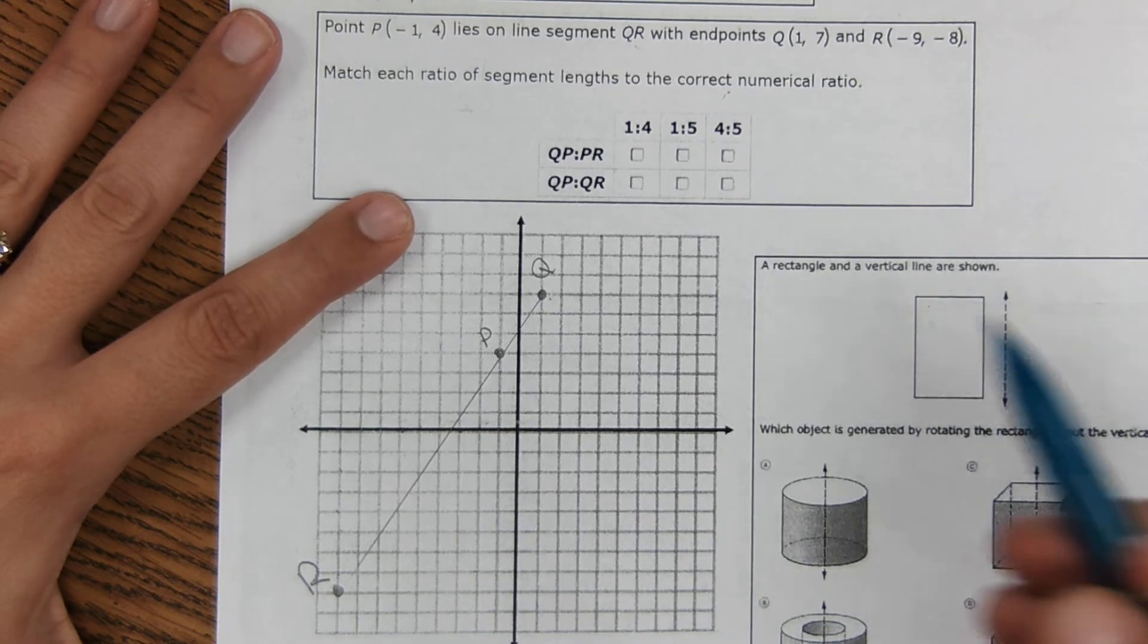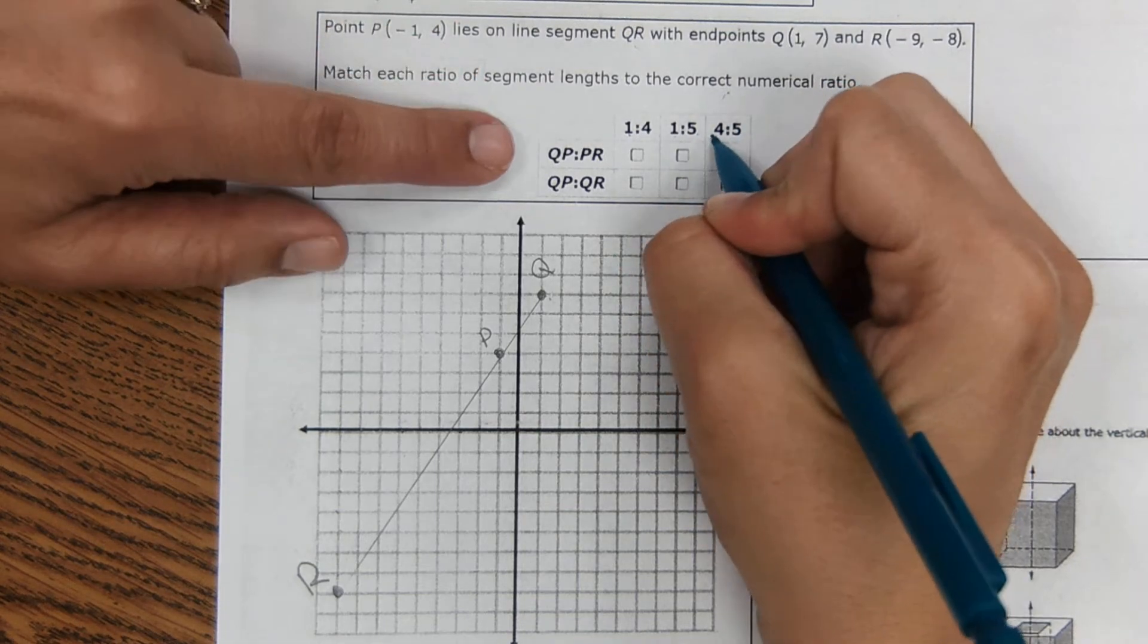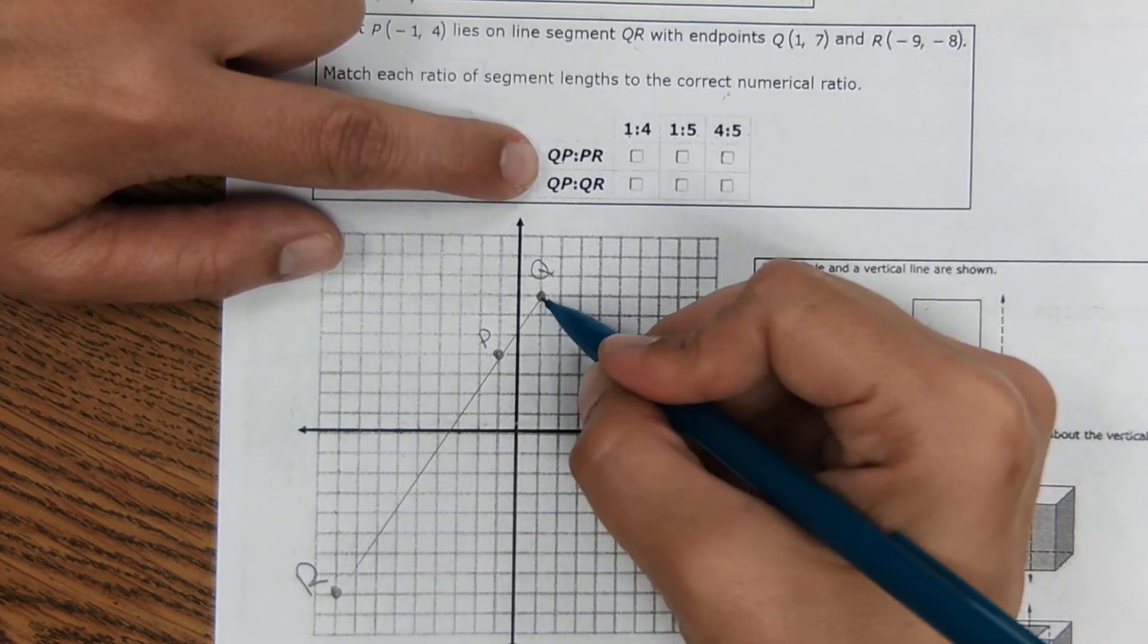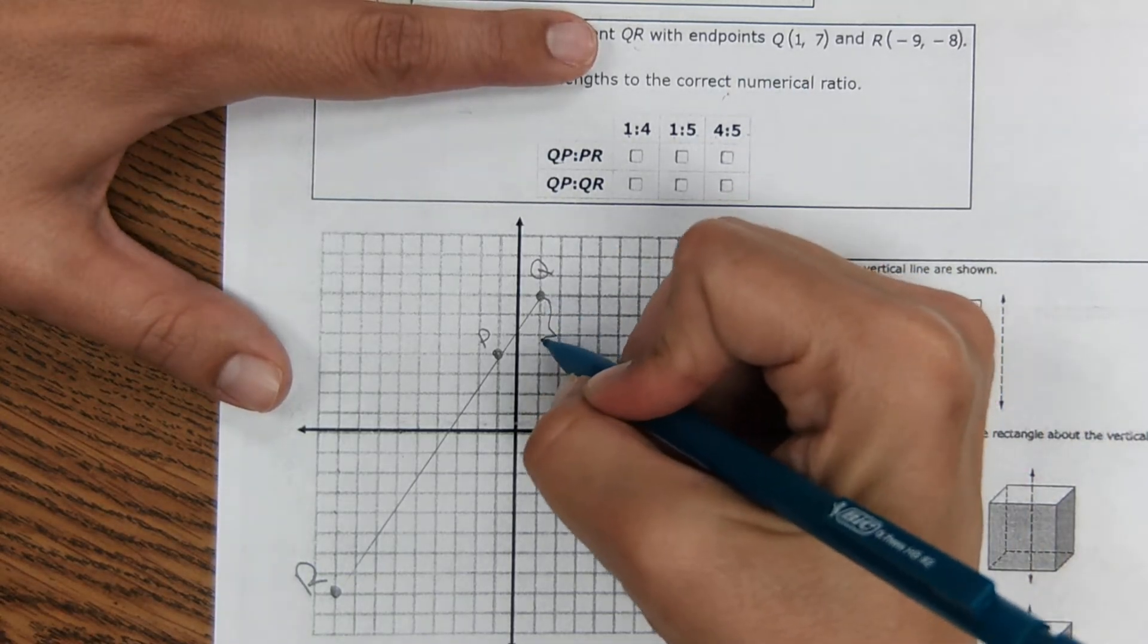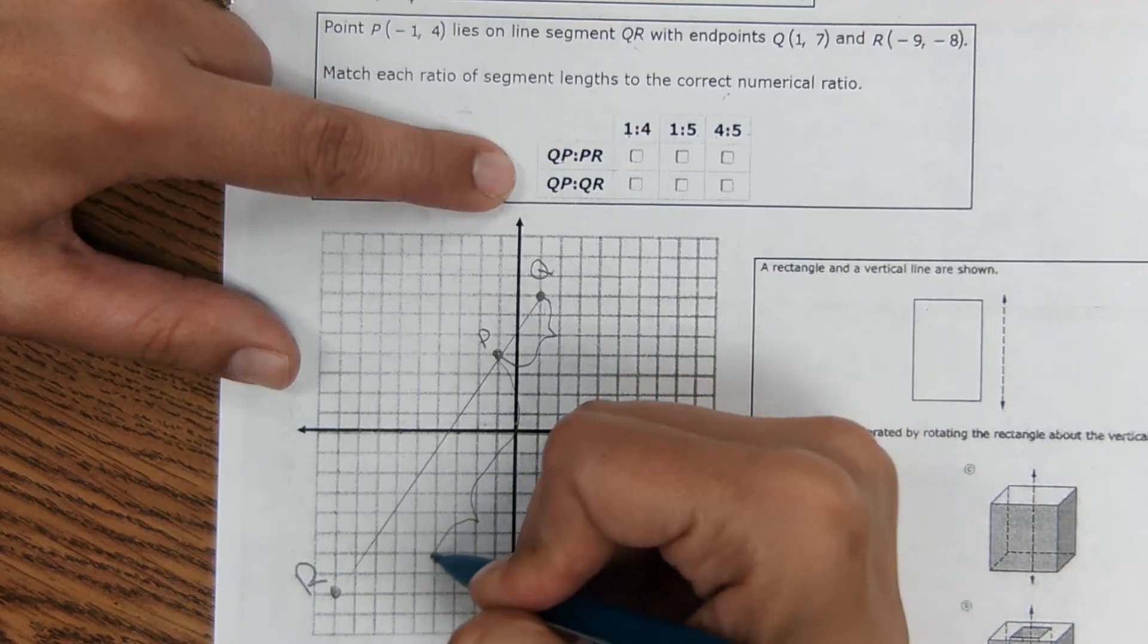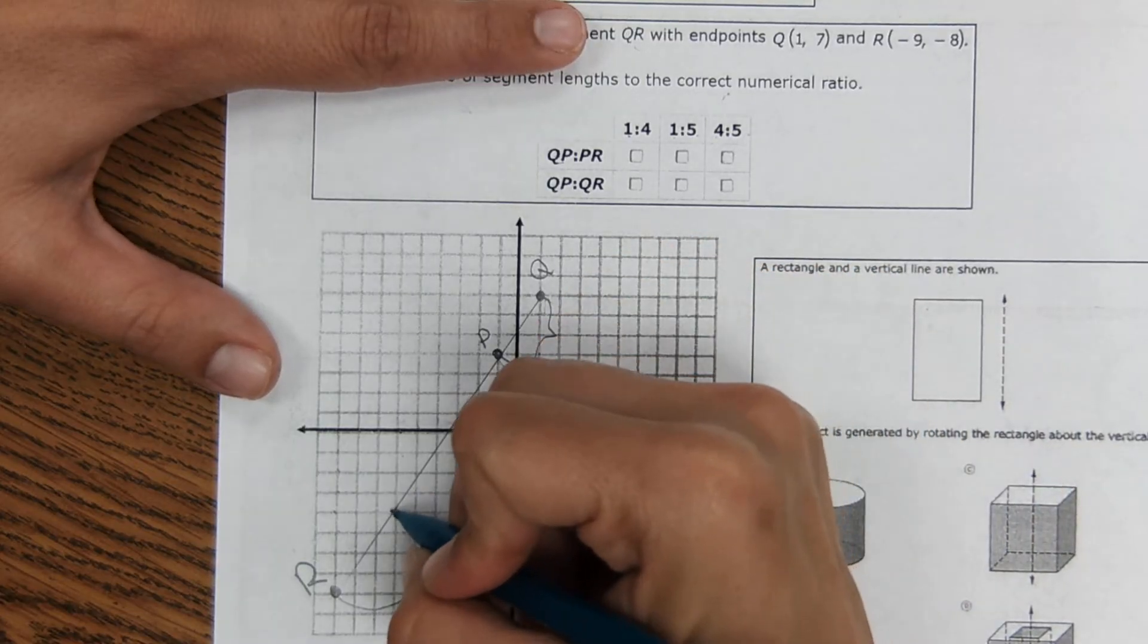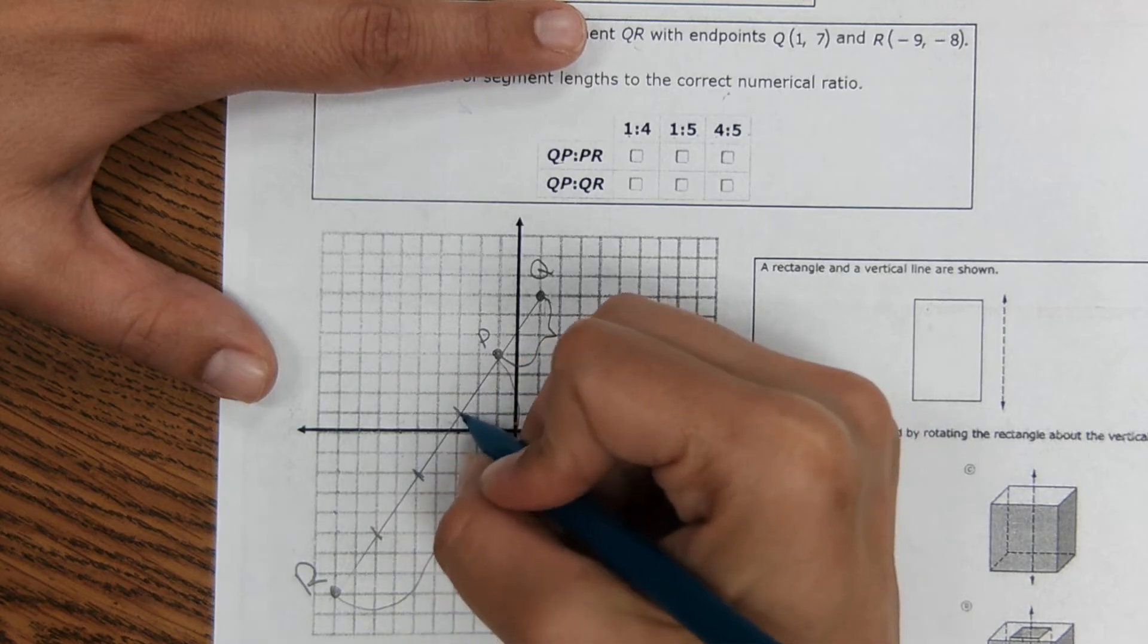So the first one, with ratios, it's one part to four parts or one part to five, four parts to five parts. QP would be this part of the segment. PR is this part. It wants to know whether this is a one to four ratio or a one to five or four to five. So QP right here. And then PR would be all of this. It's hard to tell whether this is like four parts compared to that or whatnot. But if you look at where this line intersects here, so like right here, right here, and right here.